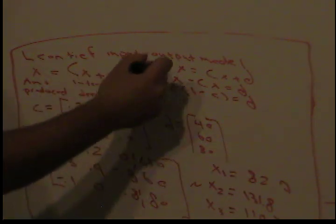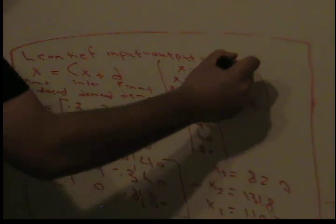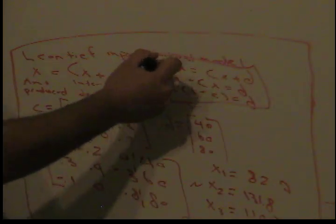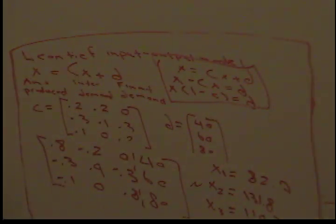Once again, if you can get a grasp of the equation (I minus C)x equals D, the rest is just simple row reduction. Thank you for watching — see you guys next time.